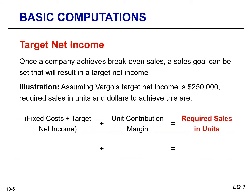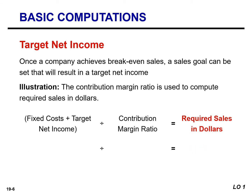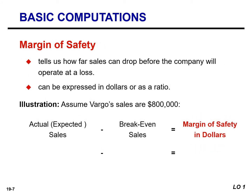Once a company achieves the break-even point, it then sets a sales goal that will generate a target net income. Vargo's management has a target net income of $250,000. In order to achieve this target net income, they will need to sell 2,250 units. We can use the contribution margin ratio to compute the required sales in dollars. In order to achieve net income of $250,000, Vargo has to sell 2,250 camcorders for a total price of $1,125,000.